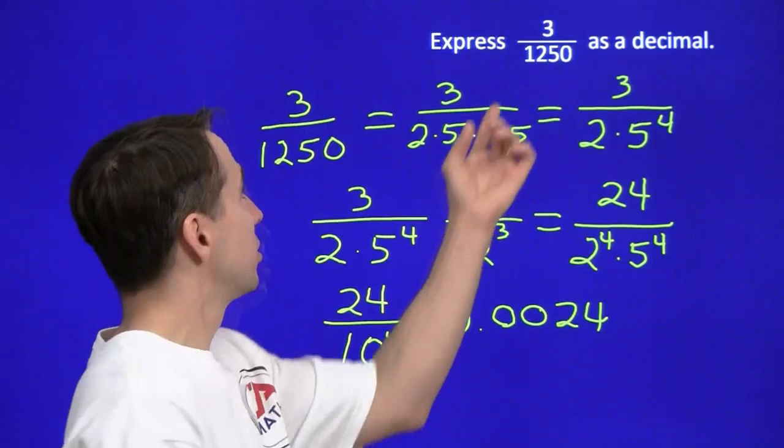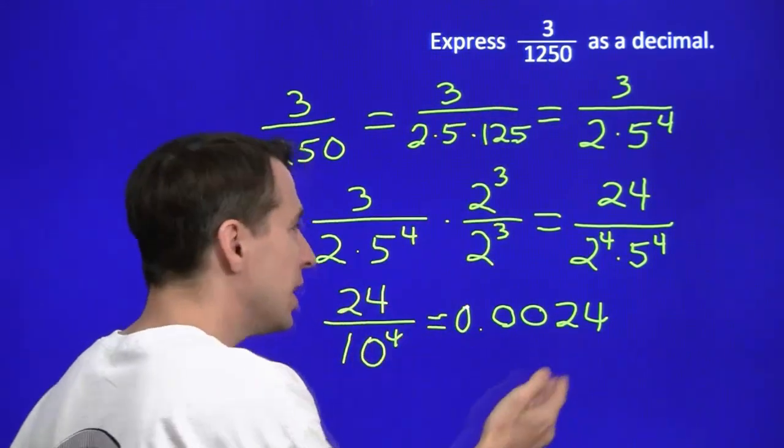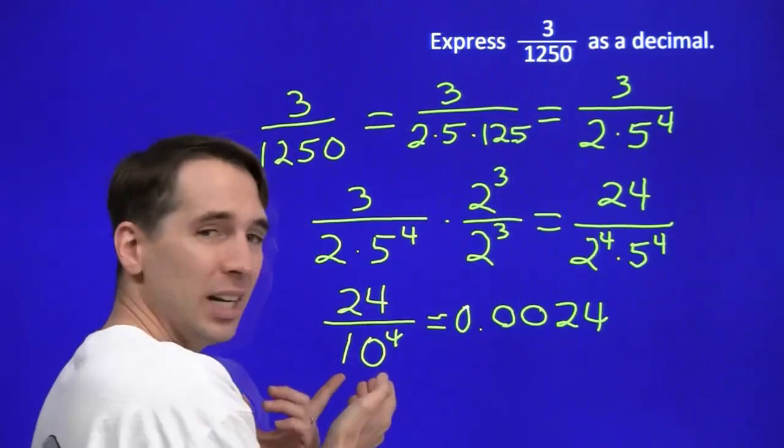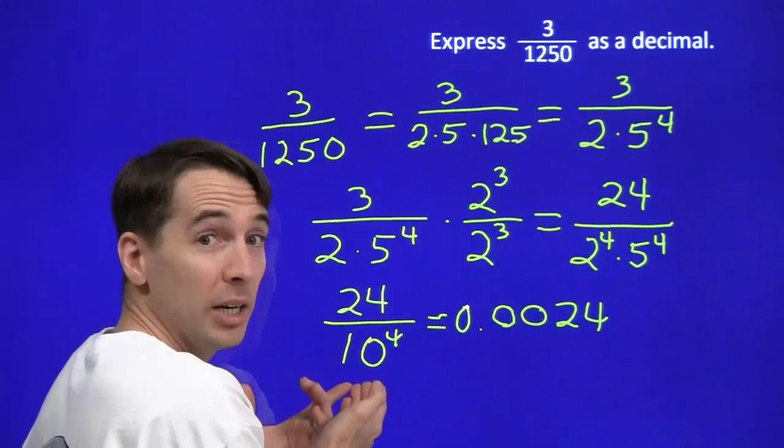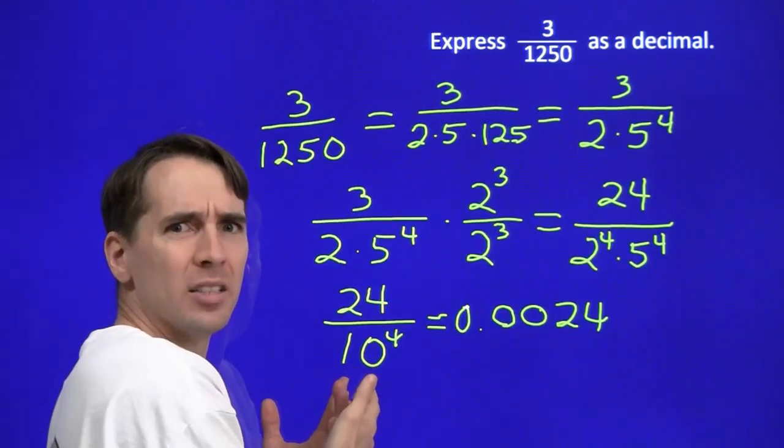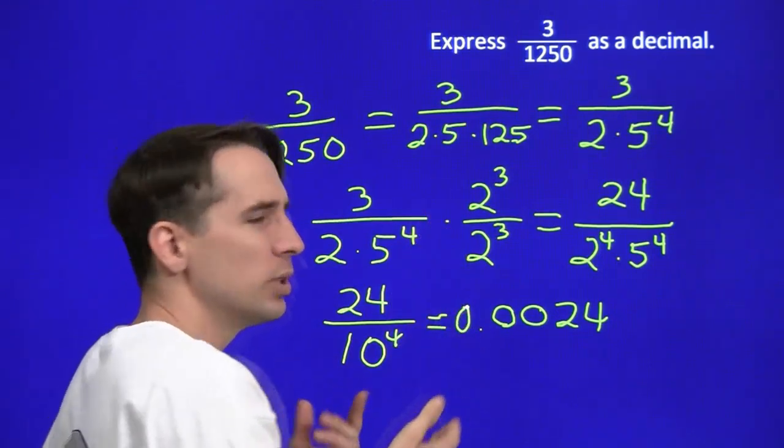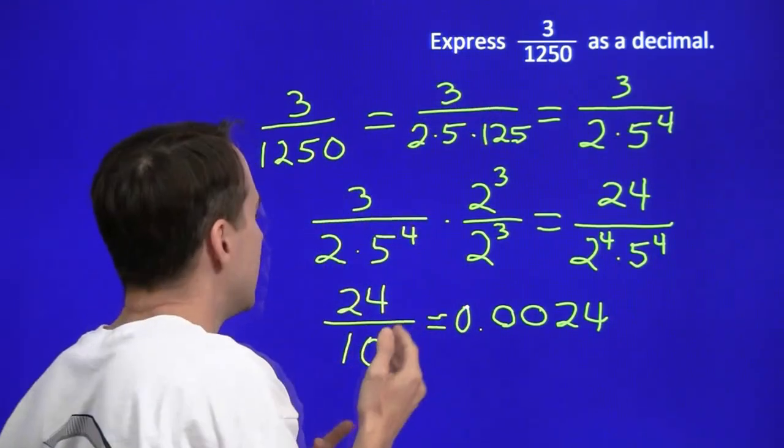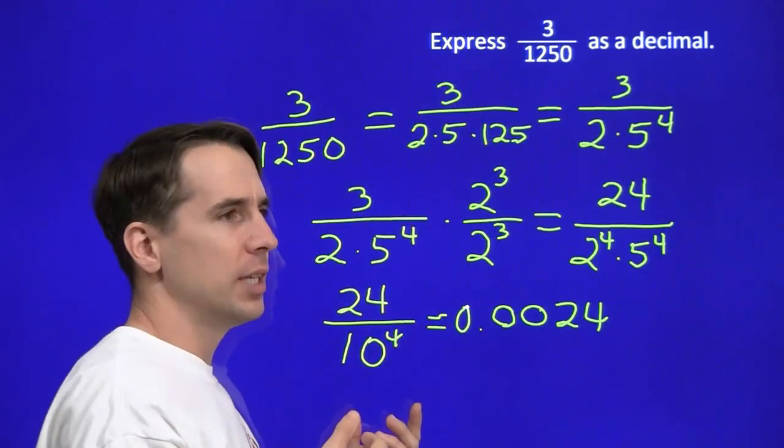Now, we got our key strategy to turn a fraction into a decimal, is to take our fraction and write it as a fraction whose denominator is a power of 10. But what do we do if that's not possible? How do we turn a fraction into a decimal if it's not possible to turn the denominator into a power of 10? We'll have to check that out next.